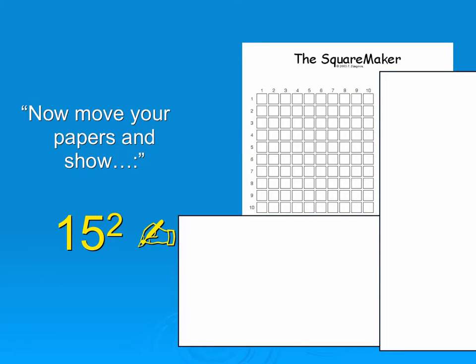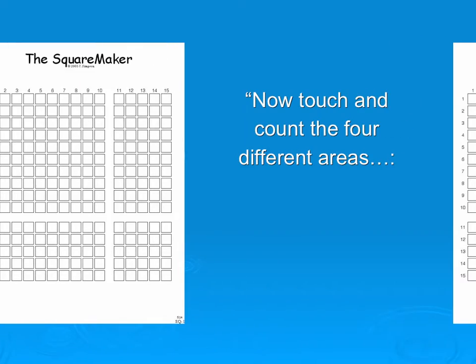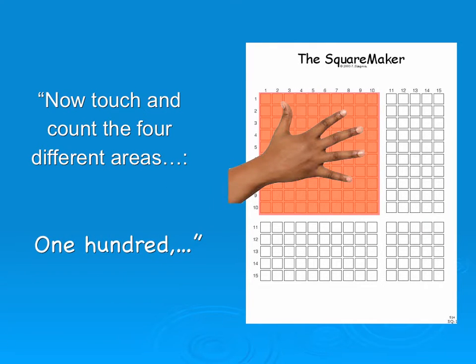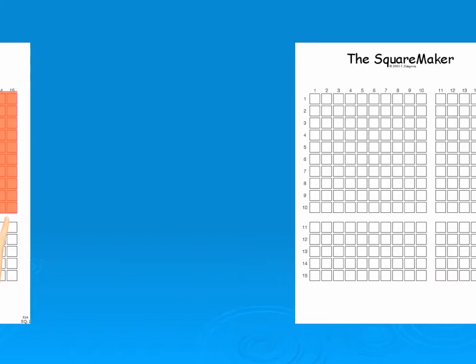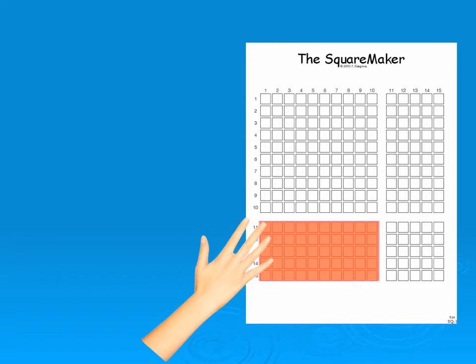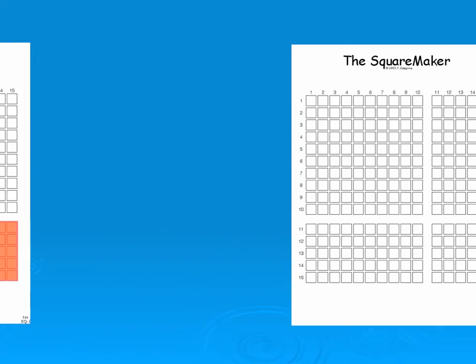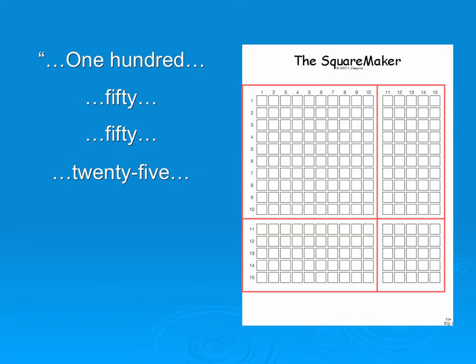Okay, now move your papers and show, and you write 15 squared on the board. Touch and count the four different areas: 100, 50, 50, 25. 100, 50, plus 50 more, and 50 and 50 is 100, and the corner is 25. Altogether that makes 225.